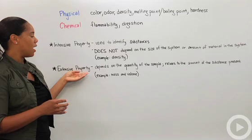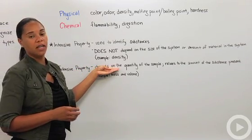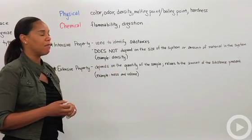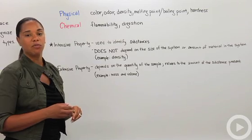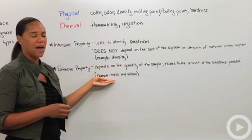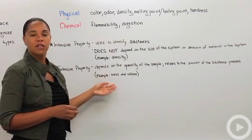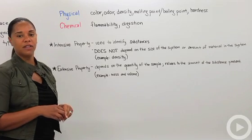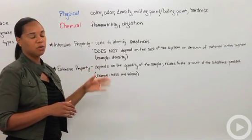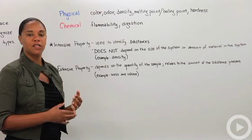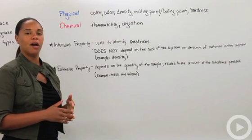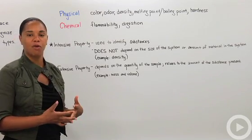An extensive property actually does depend on the quantity of the sample and relates to the amount of the substance that is actually present. Examples of that are mass and volume. I encourage you to find a couple of examples and test yourself with being able to distinguish between what constitutes a physical and a chemical property and what constitutes an intensive and an extensive property. And that's properties of matter.